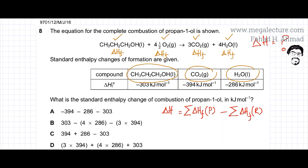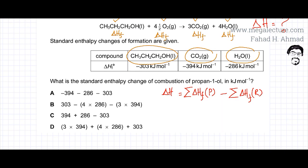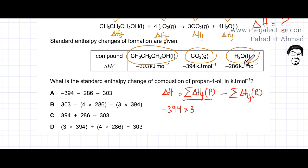First, let's find the enthalpy of formation of products. There are 3 CO2s and 4 H2Os. CO2 is minus 394, so that's minus 394 multiplied by 3 — remember, enthalpy of formation is only for 1 CO2, so with 3 CO2s you multiply. The other product is 4 H2Os, and the enthalpy of formation of H2O is minus 286, so it's minus 286 multiplied by 4. These are the enthalpy of formation values for my products.